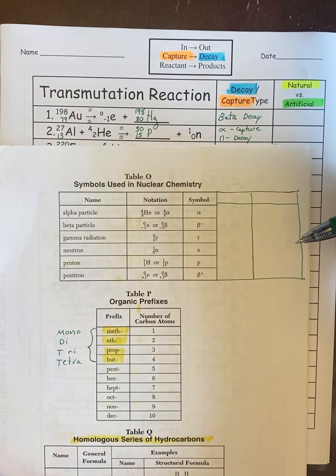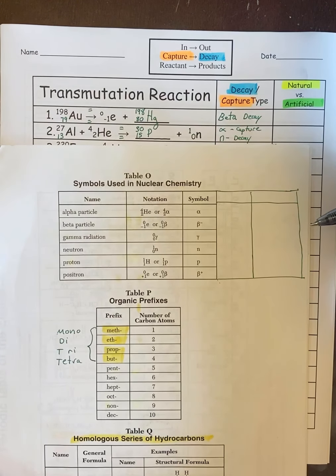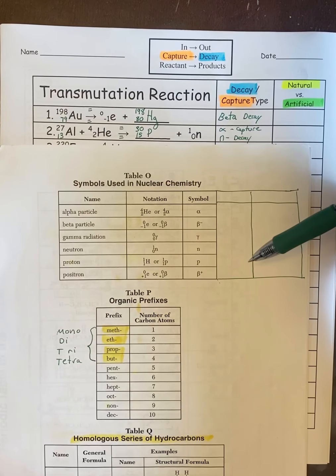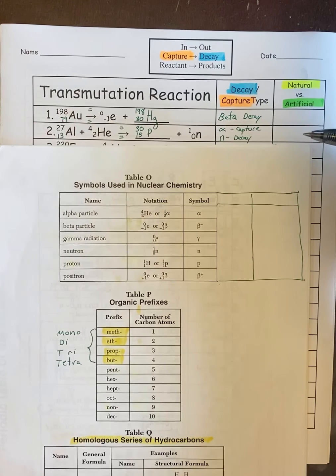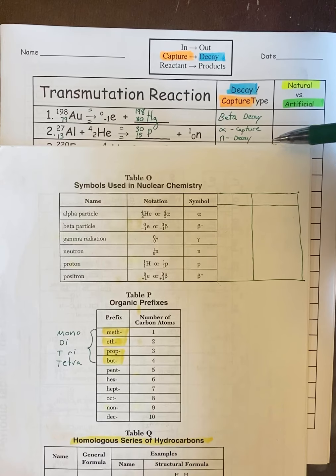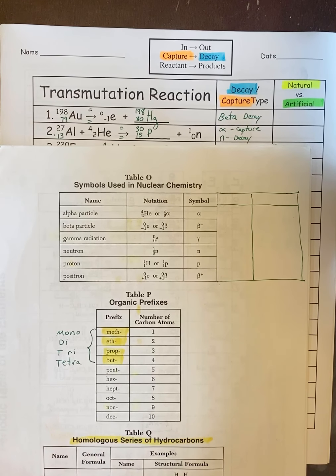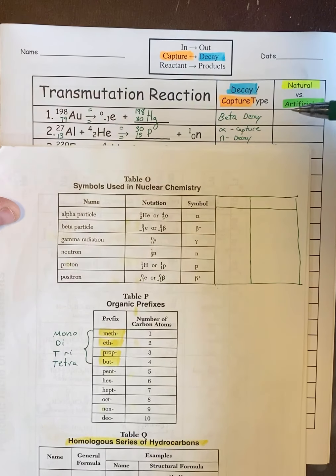So that's how you do decay and capture. You just go to table O, find the thing that's on table O. If that thing is on the right of the arrow it's being decayed and if that thing is on the left of the arrow it's being captured. What does it really mean? If it's a decay it's being shot out of the nucleus of the atom and if it's a capture it's being shot into the nucleus and captured by the nucleus. That's really all capture and decay mean and the way we represent them is by putting them on the left or the right of the arrow.